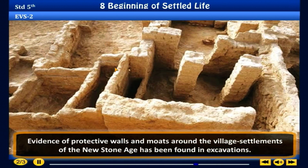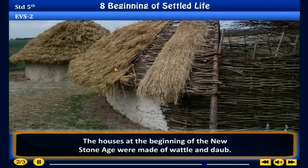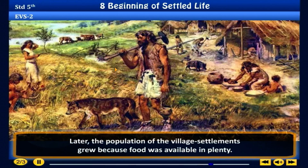Evidence of protected walls and moats around the village settlements of the new stone age has been found in excavations. These walls were built to protect the village settlements from floods, wild animals, and outsiders who stole the village cattle. The houses at the beginning of the new stone age were made of wattle and daub. The walls were screens woven from sticks or bamboo, plastered with mud or cow dung.